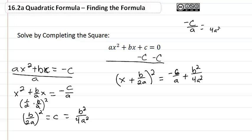So we're going to multiply by 4a. So that's going to give us negative 4ac.